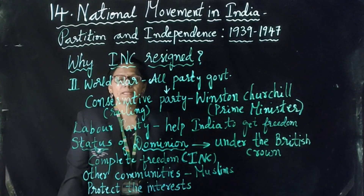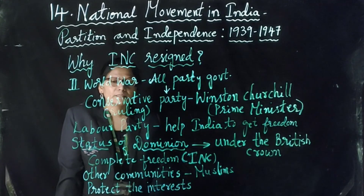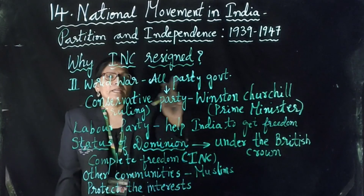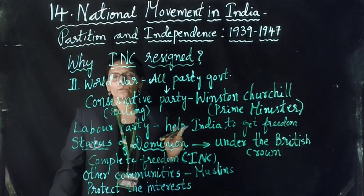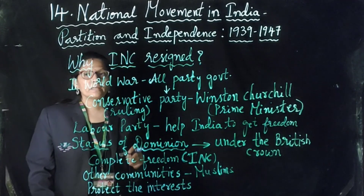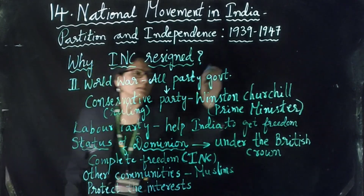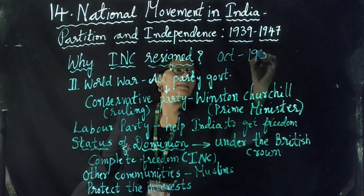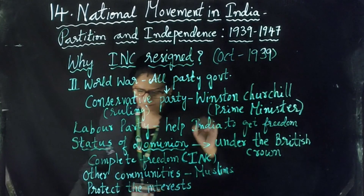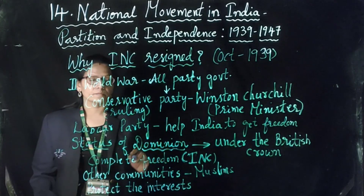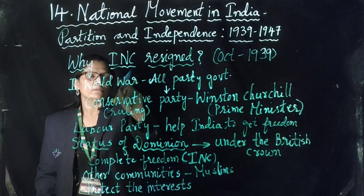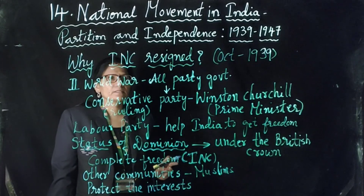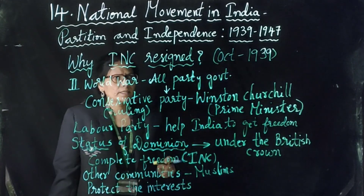The Congress was upset with the British promise of only Dominion status rather than complete freedom. That is why the Indian National Congress decided to walk out from the provisional government in October 1939. All the Congress ministries that had come to power in the 1937 elections resigned in October 1939.